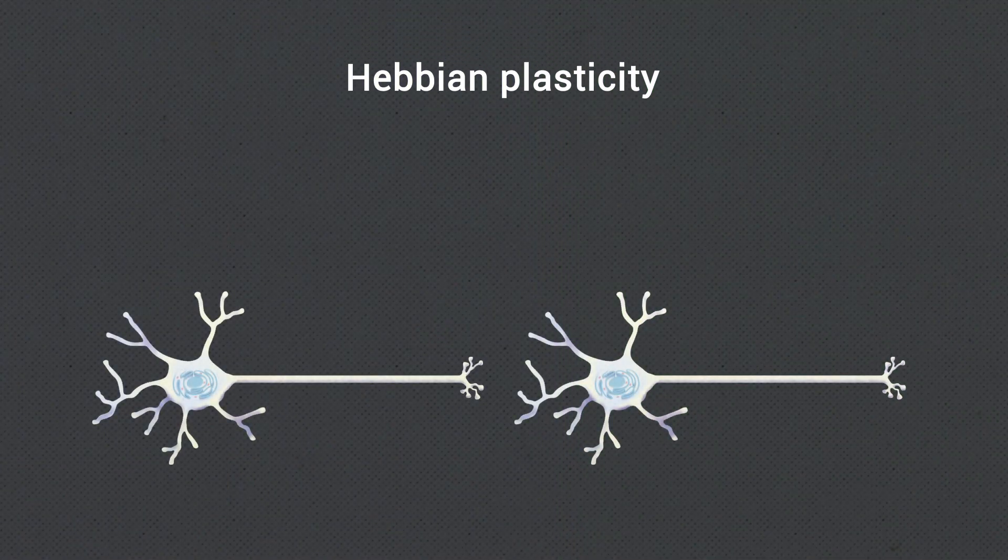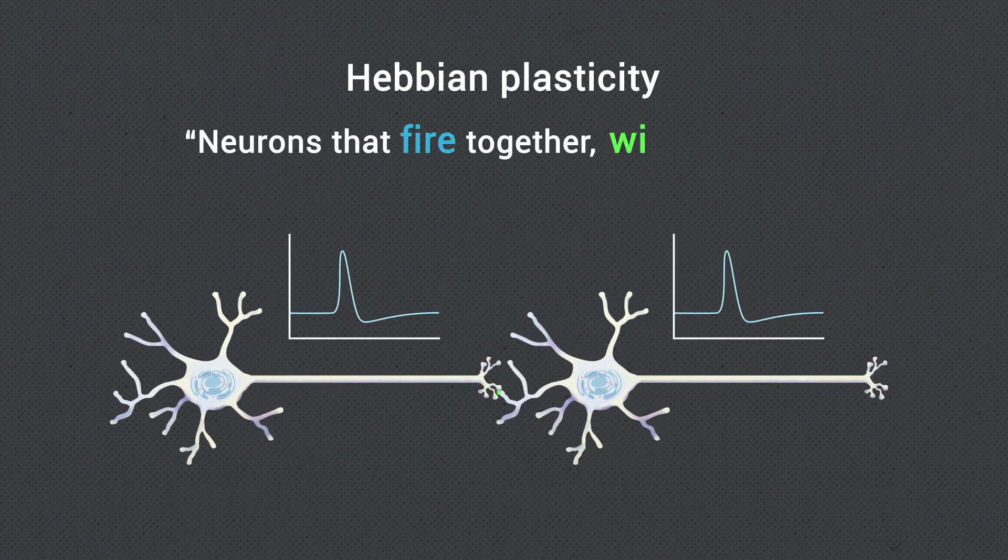Hebbian remodeling of neural circuits, encapsulated by the sentence neurons that fire together wire together, is one mechanism for learning in the brain.